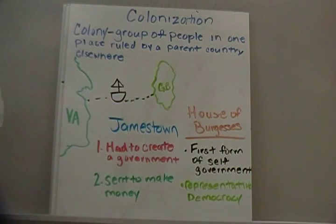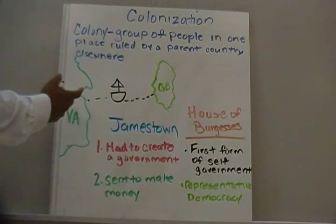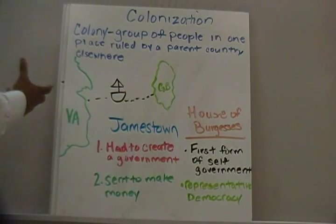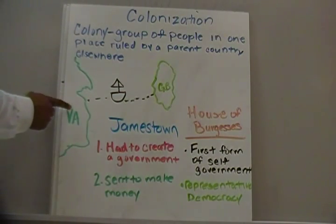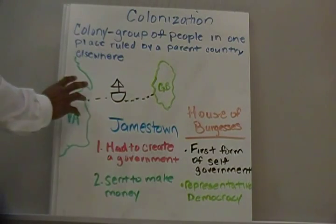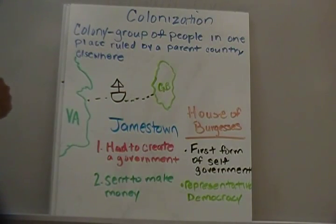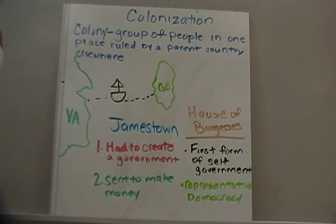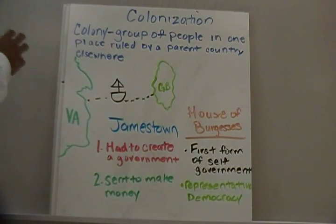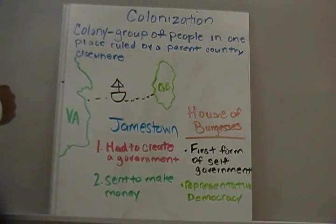So they set up camp and try to survive — a group of people from a foreign land trying to survive in the wilderness of the New World in what we now know as Virginia. Now this first colony established in the New World — the first successful colony — was called Jamestown. People came over before Jamestown, but they all died. They were not successful in setting up a colony that would last. So Jamestown colony in Virginia was the first successful colony.